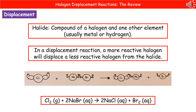Welcome to our review on halogen displacement reactions. Quick recap first of all: when we're talking about a halide, that's the compound of a halogen and one other element, which is usually a metal or hydrogen.